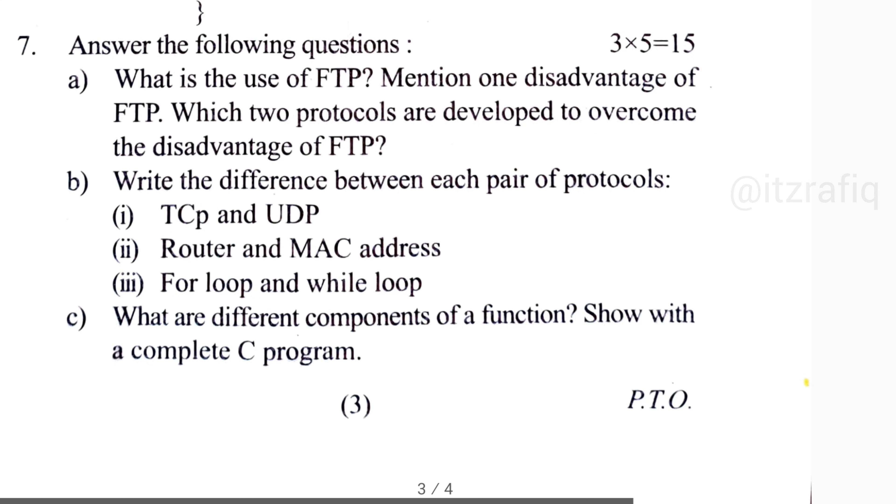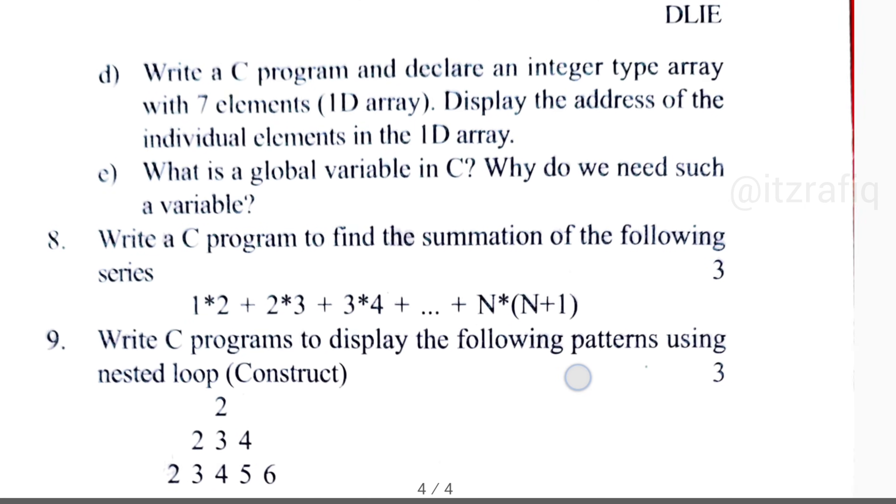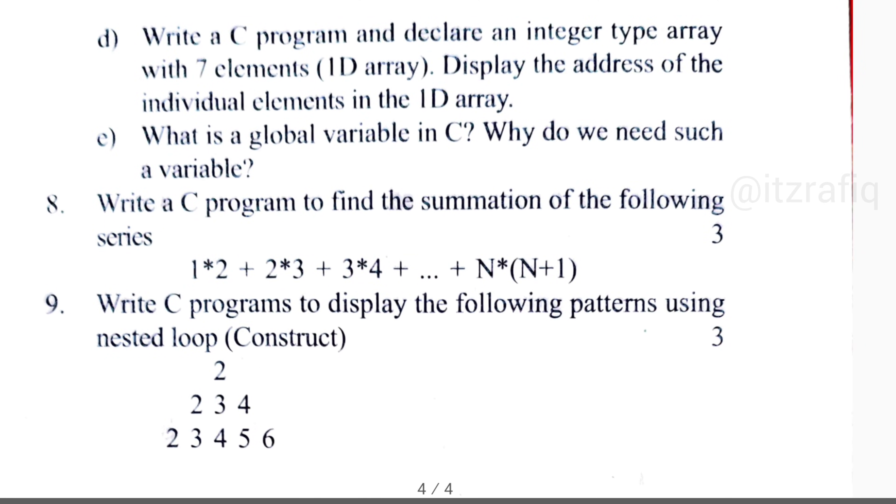Then next page, write a C program to declare an integer type array, then display the individual elements address of the individual elements in the ID array. Means the name of the array should be ID. Oh sorry, ID - not actually, it should be 1D array. 1D means one dimensional array.